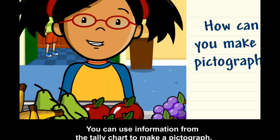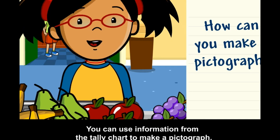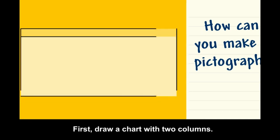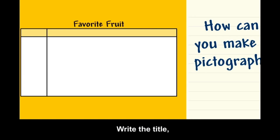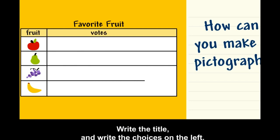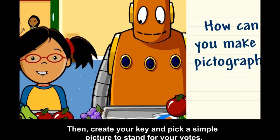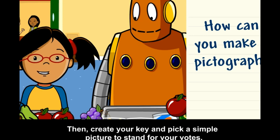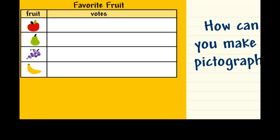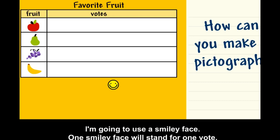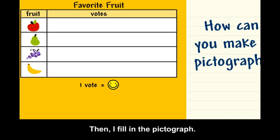You can use information from the tally chart to make a pictograph. First, draw a chart with two columns. Write the title and write the choices on the left. Then create your key and pick a simple picture to stand for your votes. I'm going to use a smiley face — one smiley face will stand for one vote. Then I fill in the pictograph.